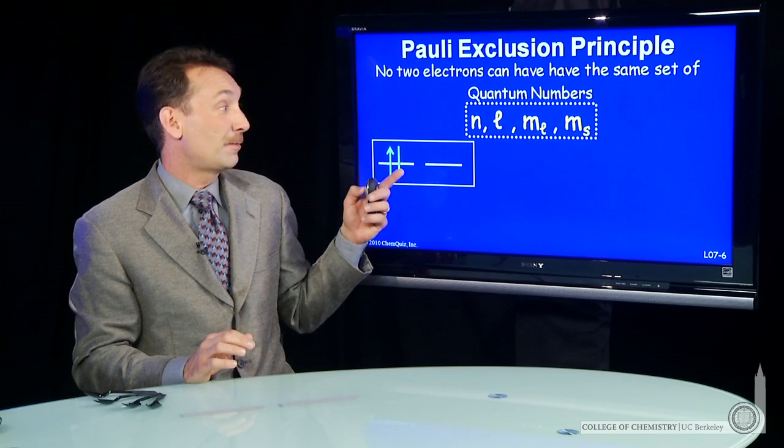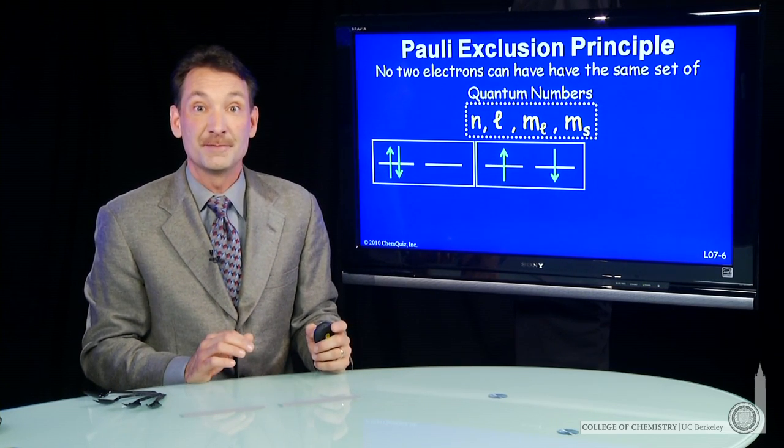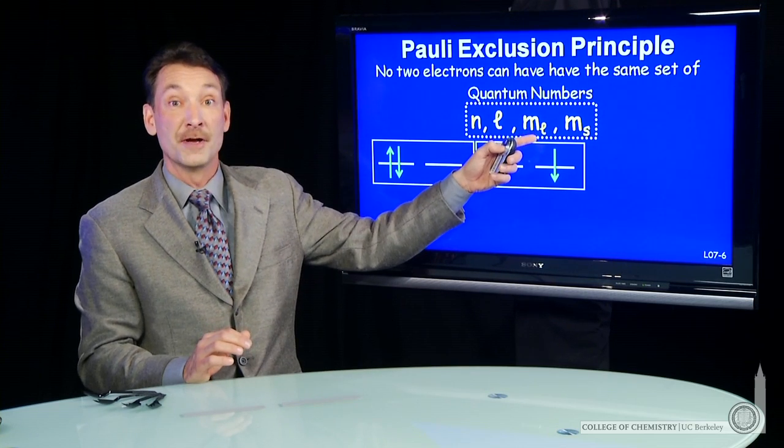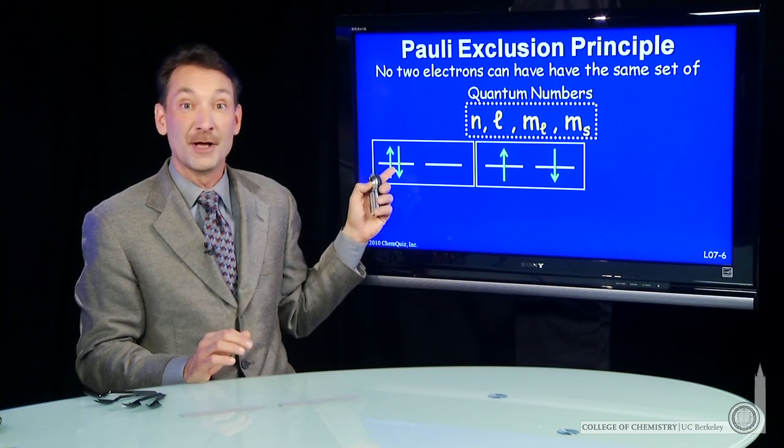Well, there are several possibilities. They could go into the same orbital, spin up and spin down. That would give them different quantum numbers. m sub s would be different, although n, l, and m sub l would be the same.